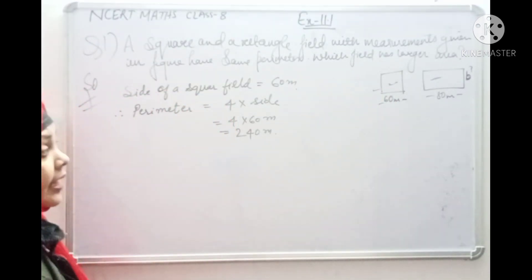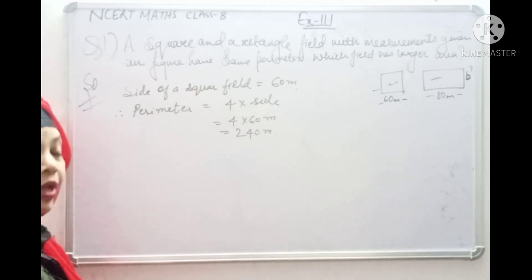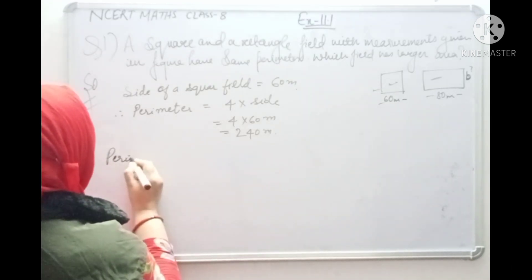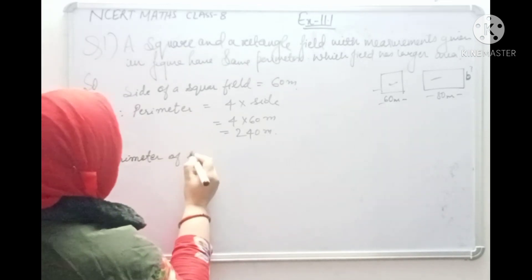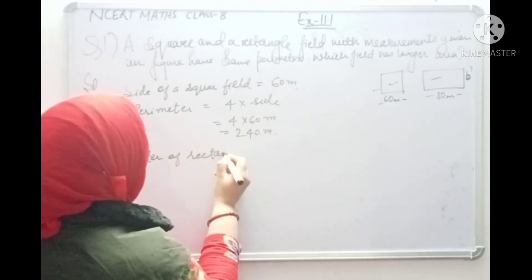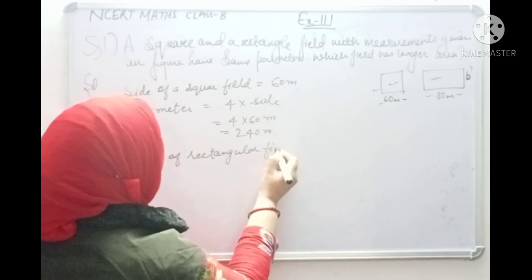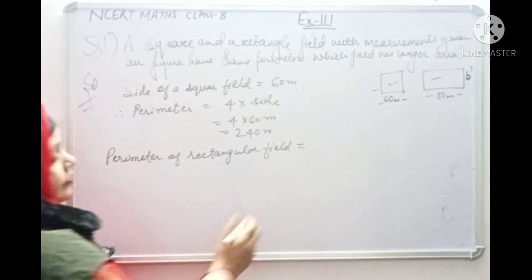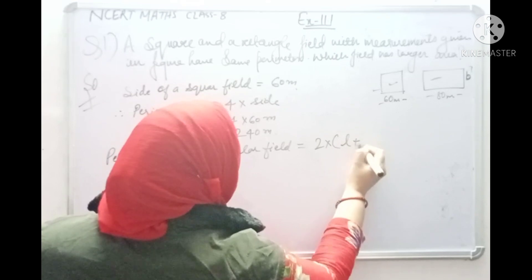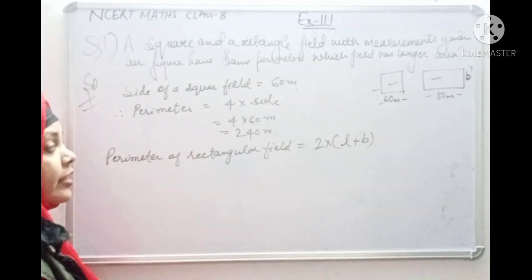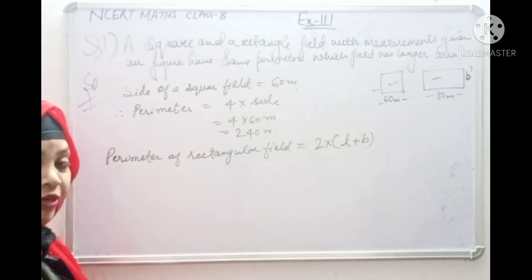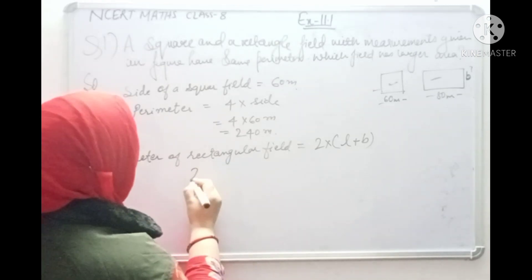The question tells us that the perimeter of the rectangular field is the same as the square field. Both have the same perimeter. So now we will find the perimeter of the rectangular field. The perimeter of a rectangle is 2 into (l plus b), and this equals 240 meters.